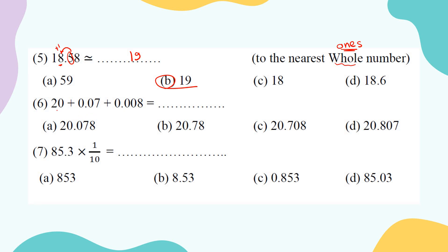For the next number, the whole part is 20. In the decimal part, I have 7 in the hundredths — so in the tenths I put zero, in the hundredths I put 7. The 8 is in the thousandths place. The right answer is A.